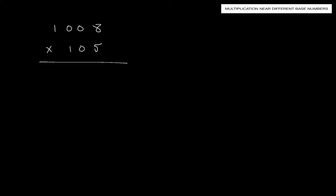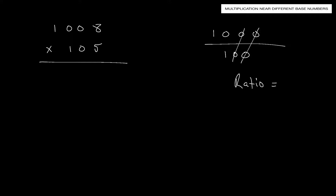The first thing you want to do is put the two base numbers — base 1,000 for 1,008, and base 100 for 105 — and find the ratio between them. We cancel out zeros, and we can see that the ratio equals 10.